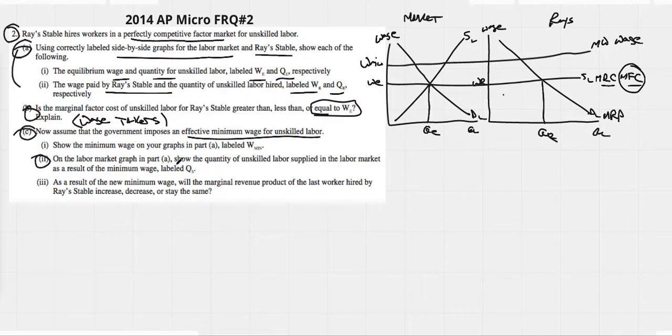On the labor graph in part A, show the quantity of unskilled labor supplied in the labor market as a result of the minimum wage. Label it Q-S. Obviously, when the wage goes up, lots of people want to supply their labor, or at least more do anyway. So this should be our Q-S.